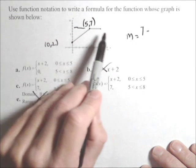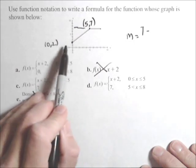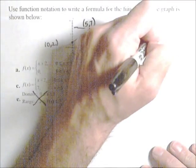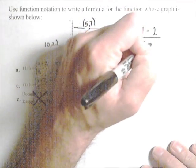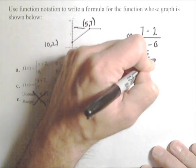Where I left off is I was starting to find the slope here. I identified a couple of points, 0, 2 and 5, 7. So I have 7 minus 2 over 5 minus 0, which is 5 over 5, or 1.